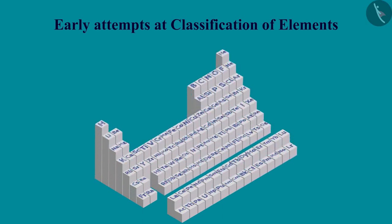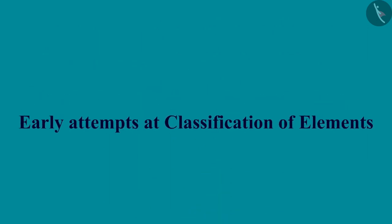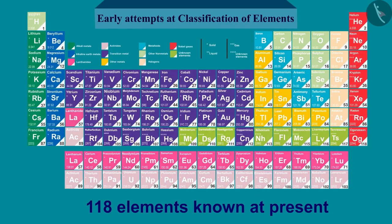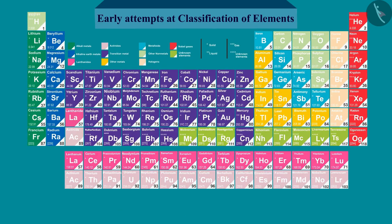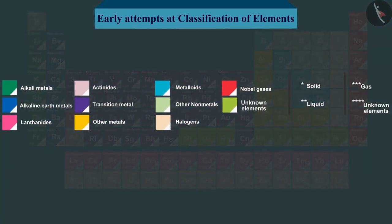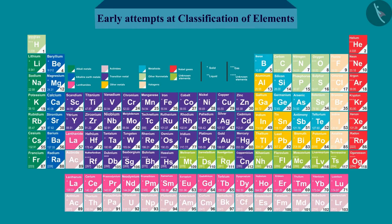Welcome to this video session. The topic we are going to cover is Early Attempts at Classification of Elements. There are 118 elements known at present, and it is very difficult to study the properties of all these elements separately. So, all the elements have been divided into a few groups such that elements in the same group have similar properties. We will now describe the various attempts made to classify the elements.